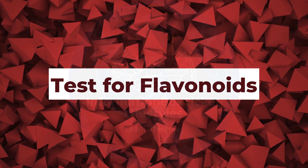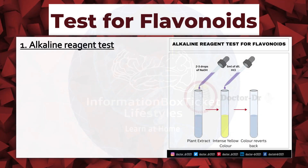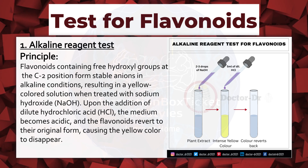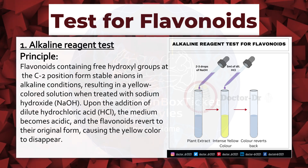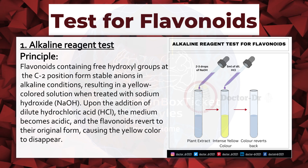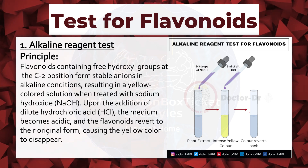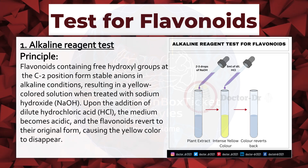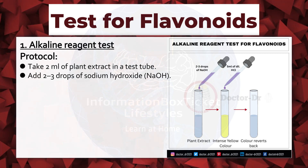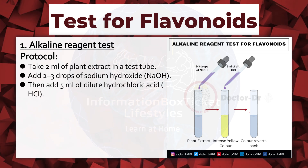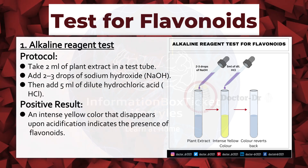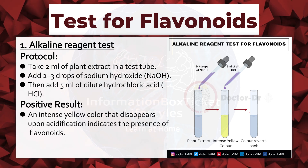Test for Flavonoids. Alkaline Reagent Test. Principle: flavonoids containing free hydroxyl groups at the C2 position form stable anions in alkaline conditions, resulting in a yellow-colored solution when treated with sodium hydroxide. Upon addition of dilute hydrochloric acid, the medium becomes acidic and the flavonoids revert to their original form, causing the yellow color to disappear. Protocol: take 2 ml of plant extract in a test tube, add 2–3 drops of sodium hydroxide, then add 5 ml of dilute hydrochloric acid. Positive result: an intense yellow color that disappears upon acidification indicates the presence of flavonoids.